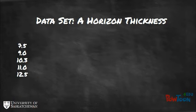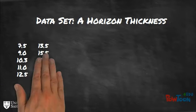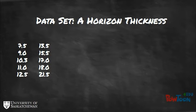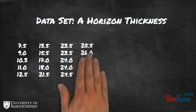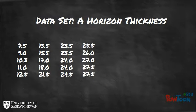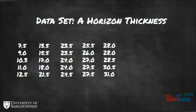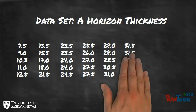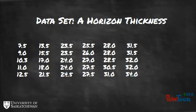In this slide, we are organizing the observations from the smallest value to the highest value. Note that the sample size, or n, equals 40 observations.